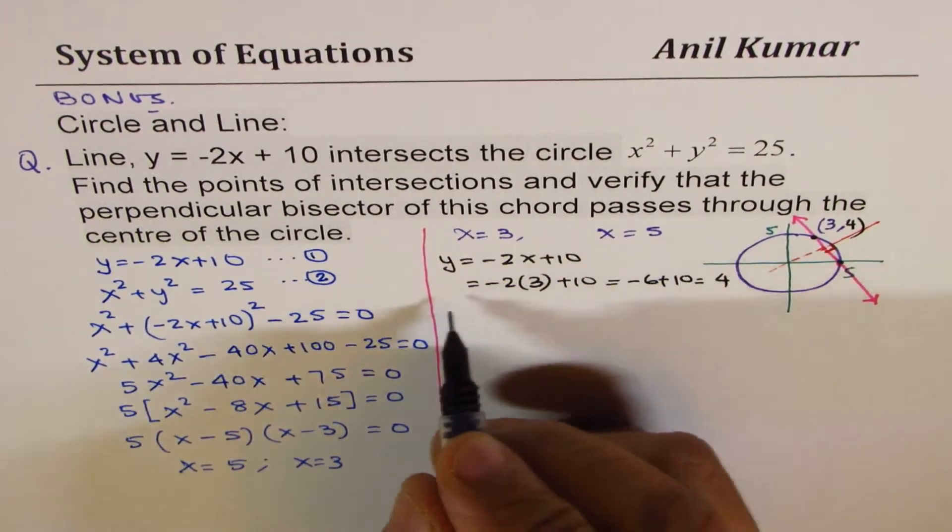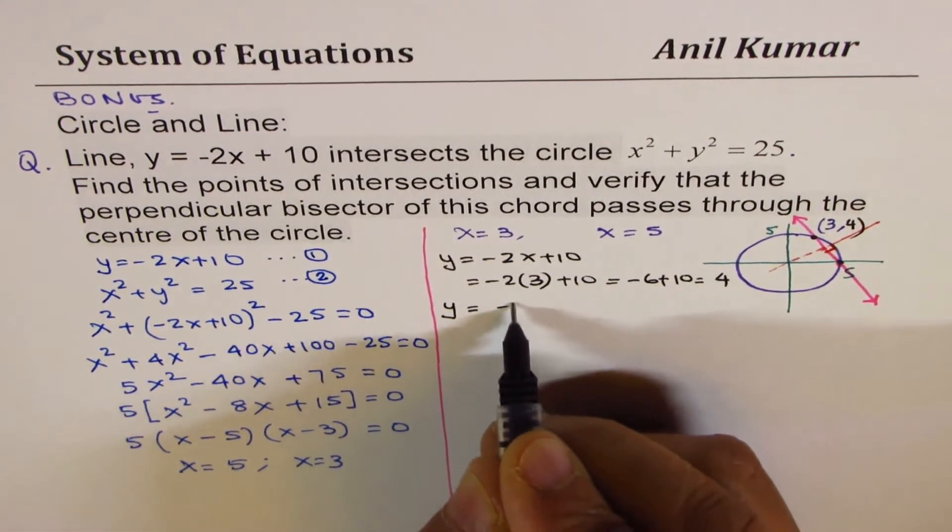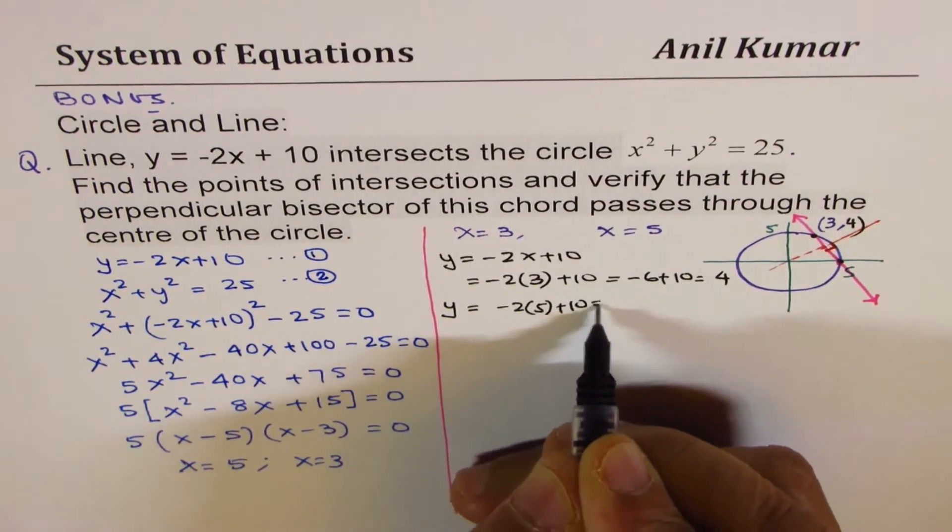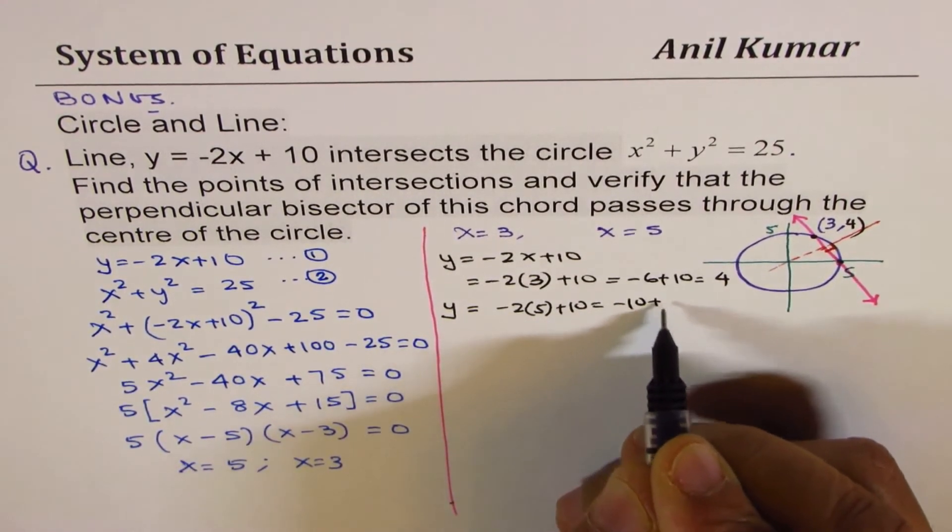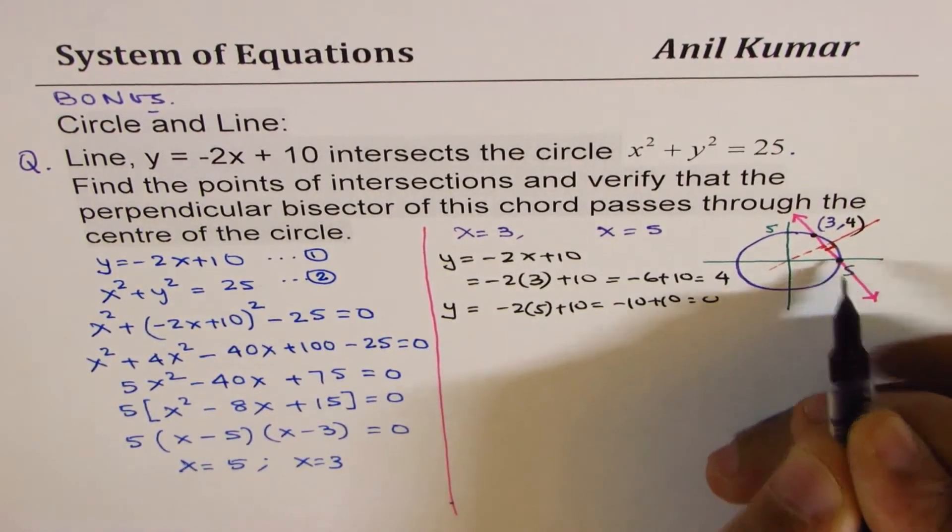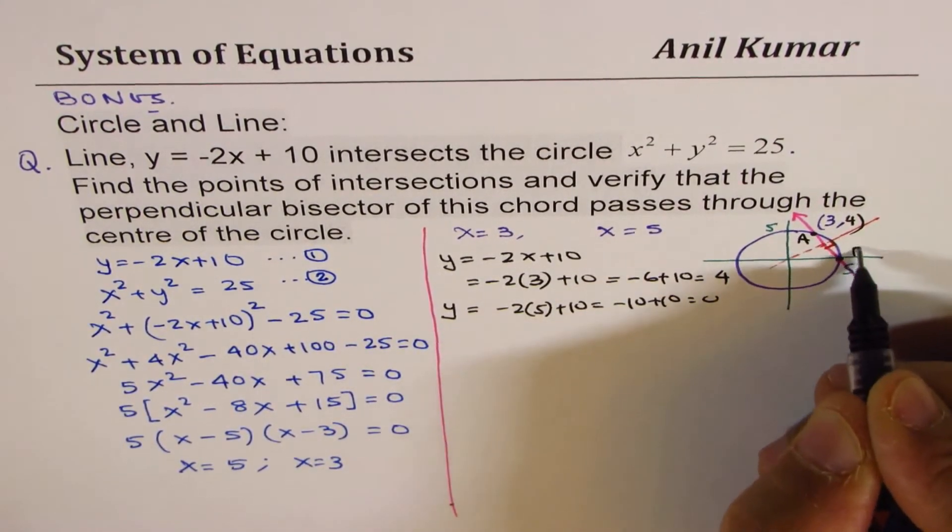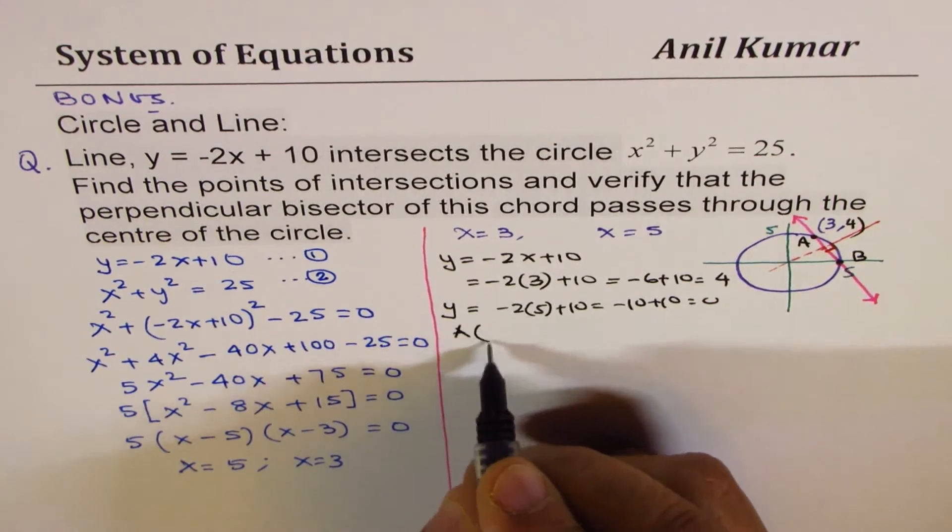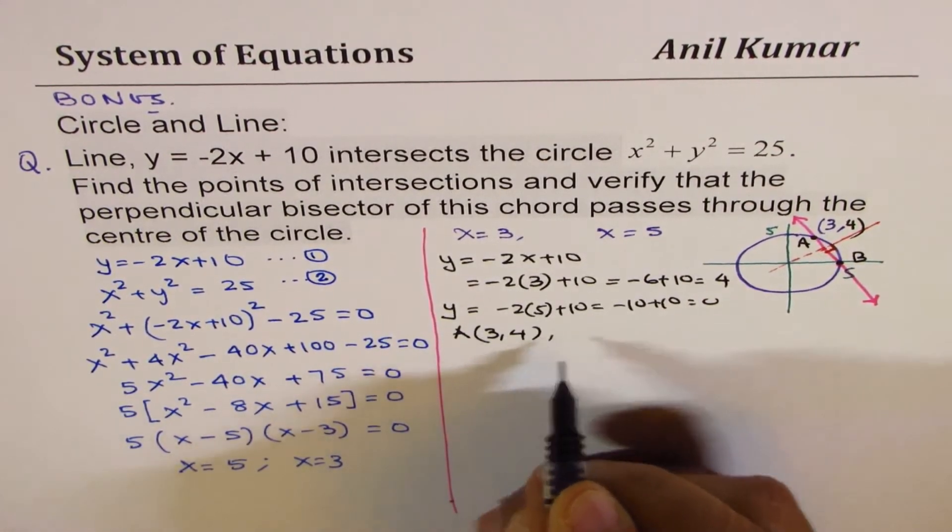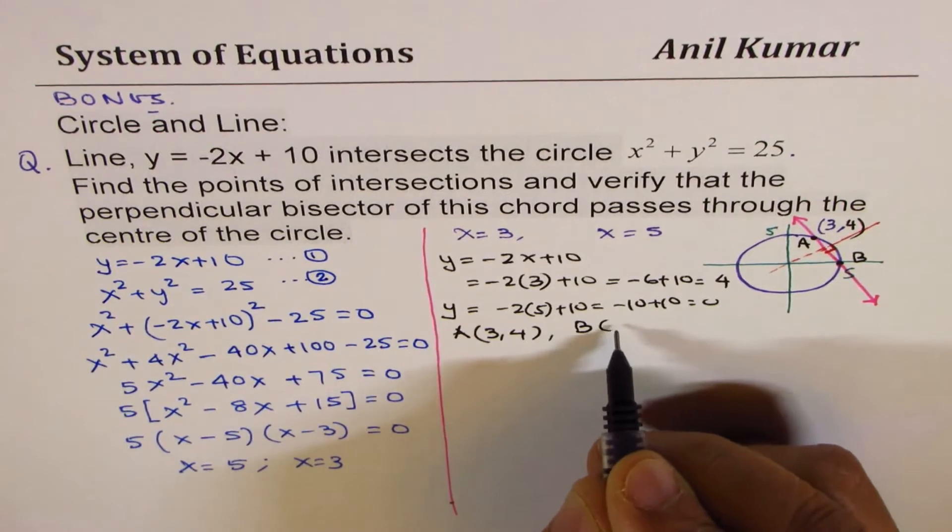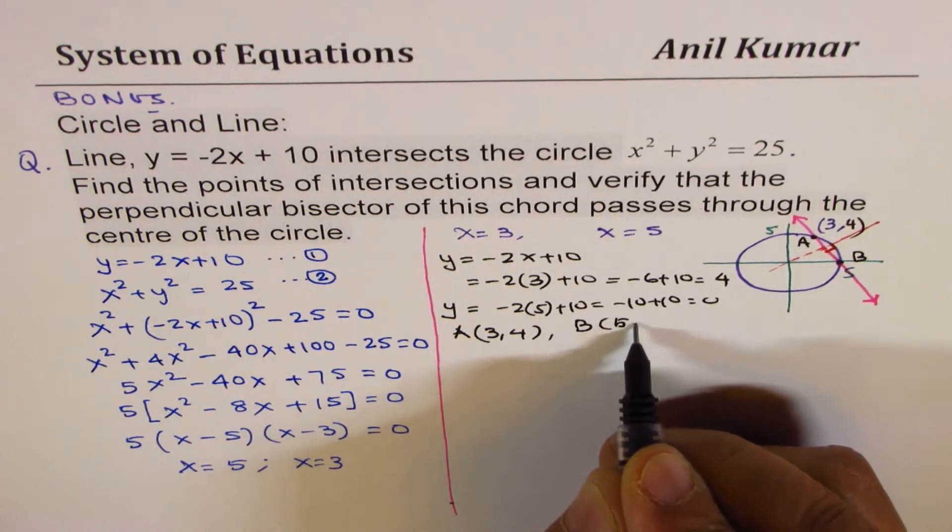The other point: x equals 5, y equals minus 2 times 5 plus 10 is minus 10 plus 10 equals 0, which is the x-intercept. So let's call these points as A and B. We have point A, which is 3, 4, and B, which is 5, 0.